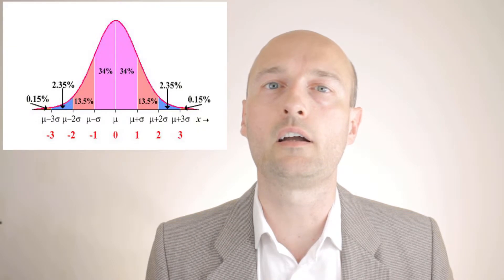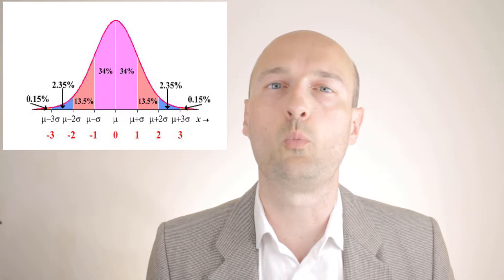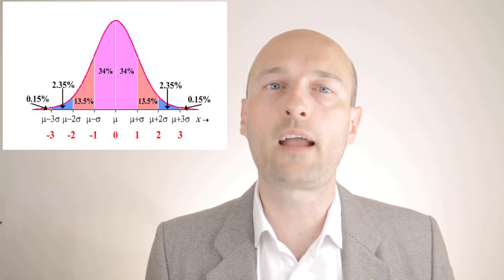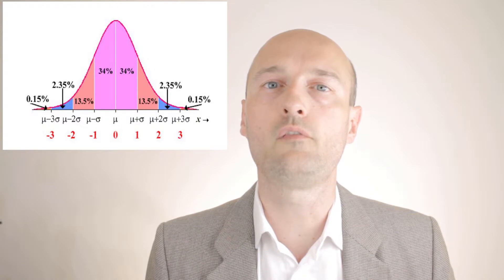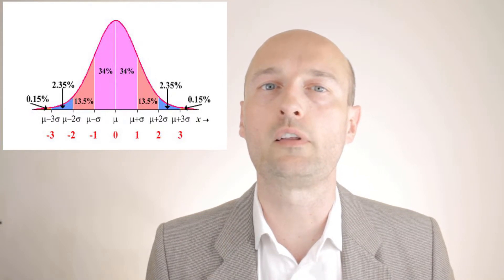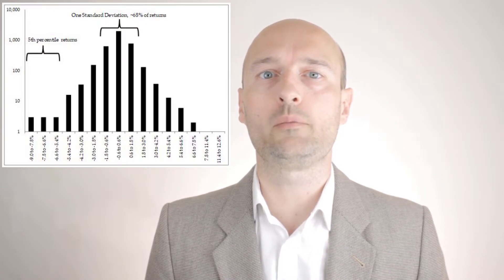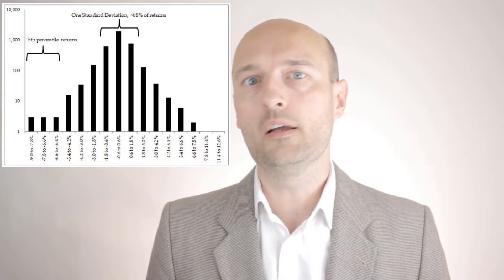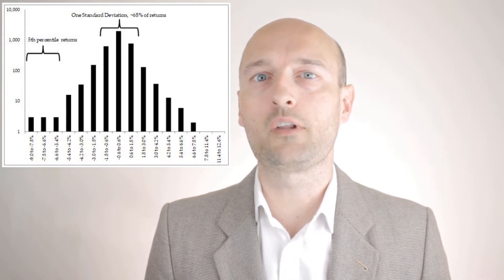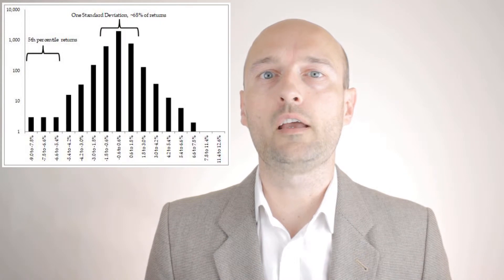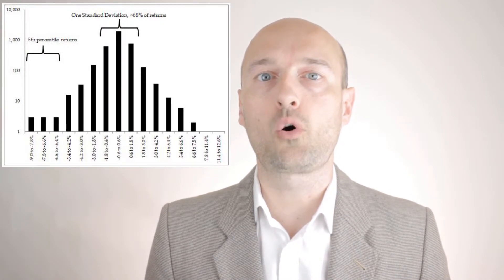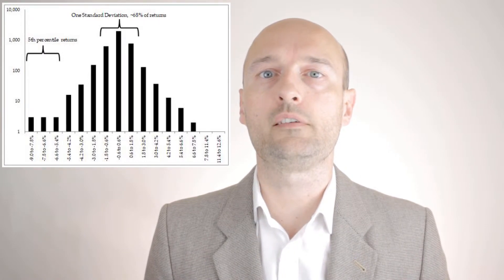In statistics, the 68-95-99 rule is shorthand to remember the percentage of values around the mean in a normal distribution with a width of one, two, and three standard deviations. More accurately, 68.27%, 95.45%, and 99.73% of values lie within one, two, and three standard deviations of the mean respectively. VAR assumes normally distributed returns, implying that 68% of the time we expect daily returns to fall between minus 1.8% and plus 1.8% for this index fund. In the worst five percent of days this portfolio will lose 6.6% or more, as shown in the left tail of the histogram on screen.